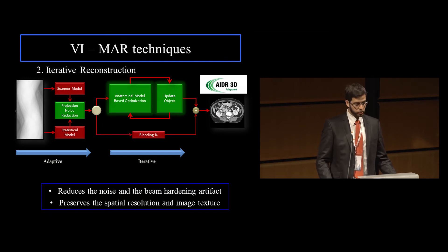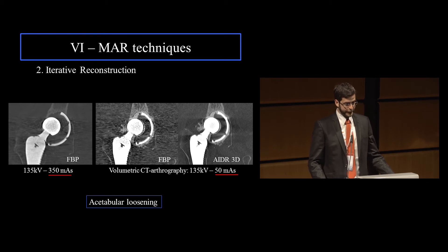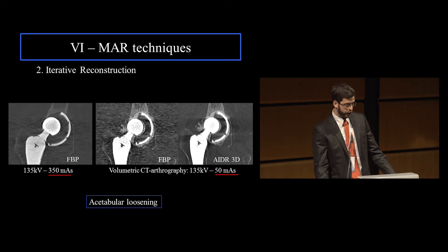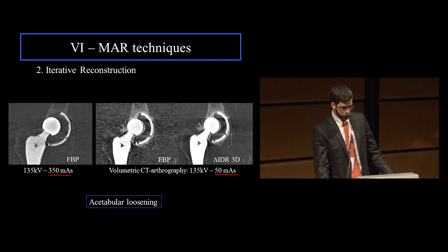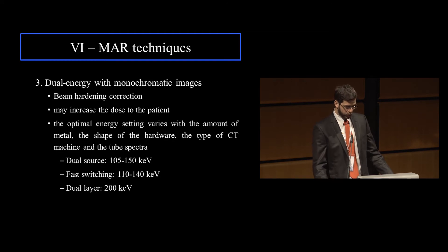We can obviously use iterative reconstruction. It reduces the noise and the beam hardening artifact, so it can help a little bit — it's not magical, but it does help. You can see the conventional aspect with average normal dose, and then you can greatly reduce the dose to the patient while using iterative reconstruction and still have very good image quality. This is another case of acetabular loosening — the acetabular component is displaced, and there's no issue identifying that.